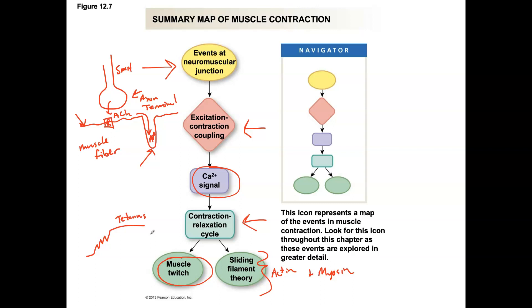These are the main events when we talk about skeletal muscle physiology: neuromuscular junction, excitation-contraction coupling, and the contraction-relaxation cycle. Let's take a closer look at the sarcomere structure and what's going on with actin and myosin in the skeletal muscle anatomy that leads to the physiology.